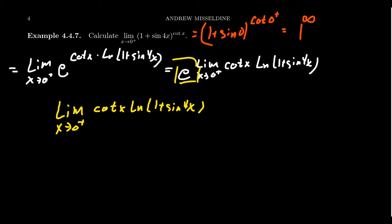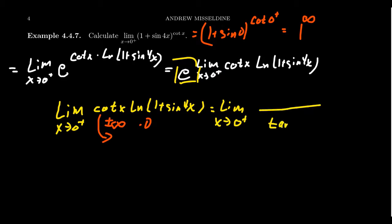As x approaches 0, cotangent goes to plus or minus infinity and the natural log of (1 + sin(4x)) goes to the natural log of 1, which is 0. So this looks like infinity times 0. We need to make this into a quotient. The easiest way is to push cotangent into the denominator as tangent, since cotangent's reciprocal is simply tangent and we can easily take the derivative of tangent.